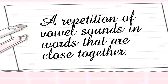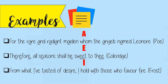Next is assonance. It is a repetition of vowel sounds in words that are close together. Example: for the rare and radiant maiden whom the angels named Leonore. In this example, the letter A is the most repeated vowel.